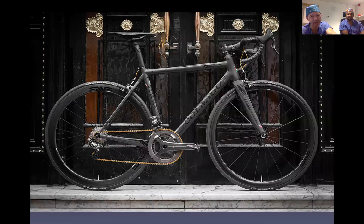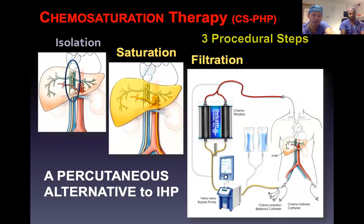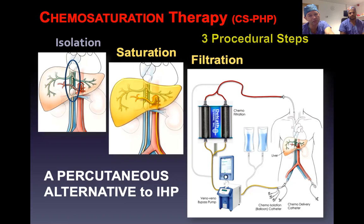The analogy here would be with chemo saturation — the gold standard. The idea surgically was to isolate the liver using clamps and bypasses and infuse chemotherapy. But that's a massive surgical undertaking, and if it works well, the morbidity means you can't easily repeat it. That led to the concept that you could isolate the liver and treat it percutaneously — through the blood vessels — without all the morbidity of major surgery. And that's when my colleague Sachin comes in, who's the expert in chemo sat.